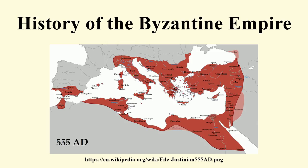Maurice, who meanwhile succeeded Tiberius, intervened in a Persian civil war, placed the legitimate Khosrau II back on the throne and married his daughter to him. Maurice's treaty with his new brother-in-law enlarged the territories of the empire to the east and allowed the energetic emperor to focus on the Balkans. By 602, a series of successful Byzantine campaigns had pushed the Avars and Slavs back across the Danube.